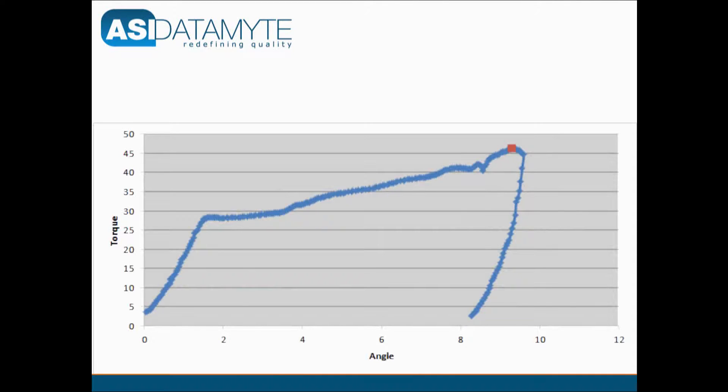This curve shows how overshoot can generate a false high peak reading. The red square shows the peak value at about 46 Newton meters, which is significantly higher than where fastener rotation began at about 28 Newton meters.